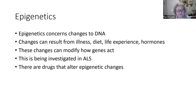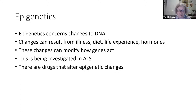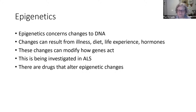Epigenetics concerns changes to DNA. We all inherit chromosomes containing DNA from our parents, and the chromosomes contain code for proteins. But the DNA can be biochemically changed — by illness, starvation, hormones like estrogen, or life experience — and these changes are permanent for the life of the individual and could modify how genes act. This is also being investigated in ALS, because there are drugs that can alter epigenetic changes. This is another source of variability, and one that very much can interact with the environment, since illness, diet, and life experience are external things that can influence epigenetics.